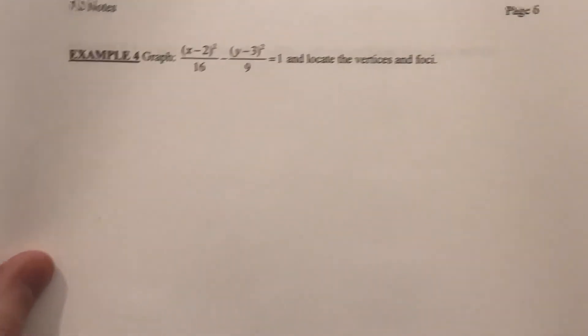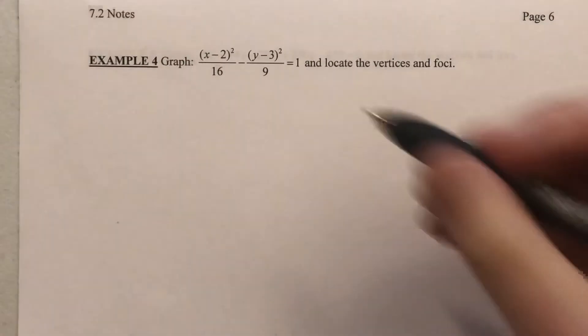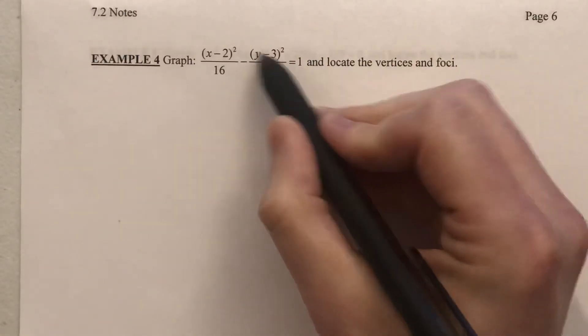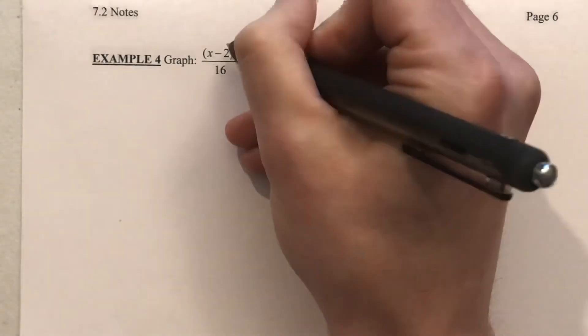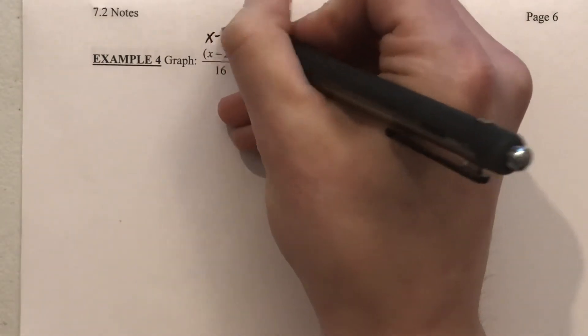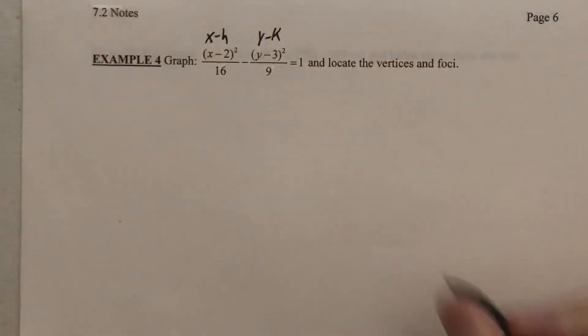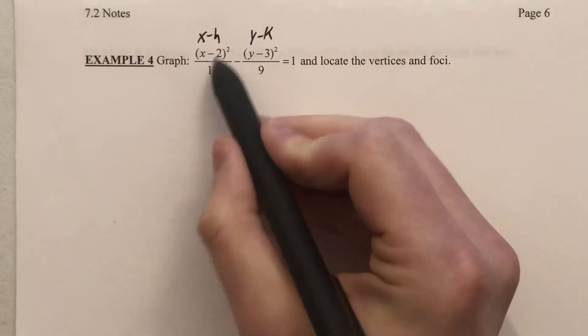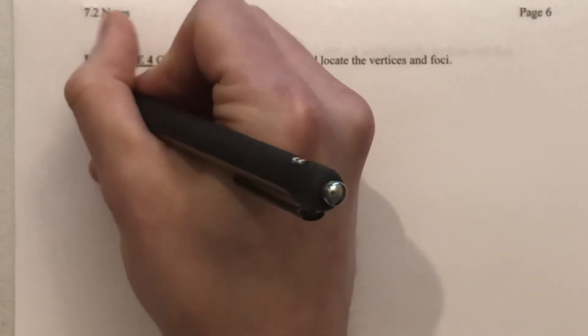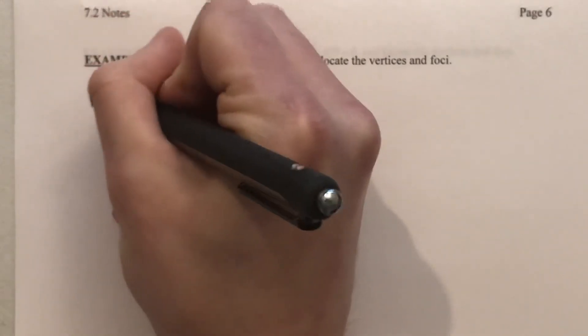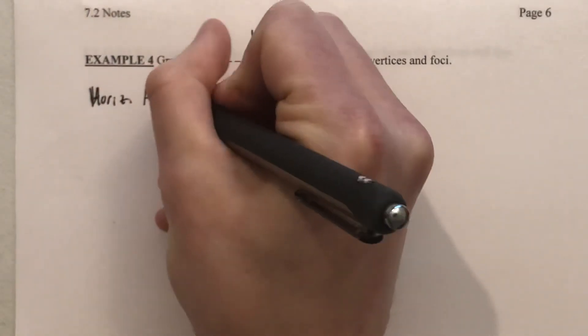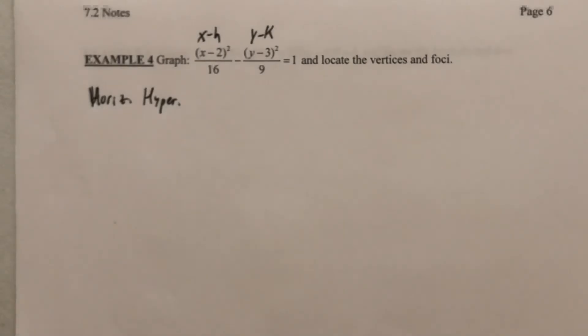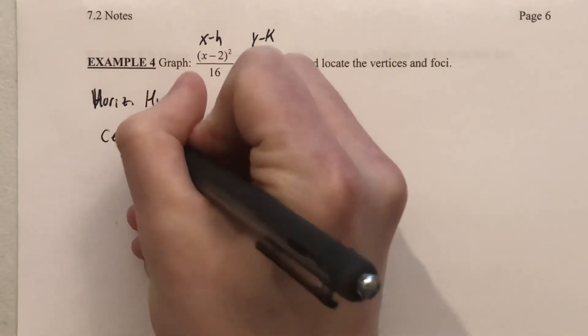All right, let's take a look at a hyperbola that has been shifted. As we see now, there's some stuff going on inside of the x and the y here. Now keep in mind, this was the x, so that's the h. Here's y, so that's the k. So we can identify x term comes first, meaning this is a horizontal hyperbola that's going to open left and right.